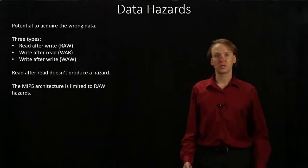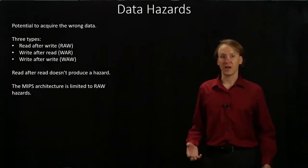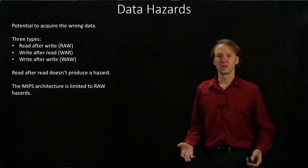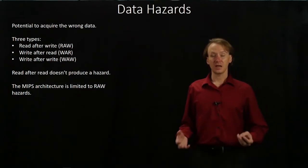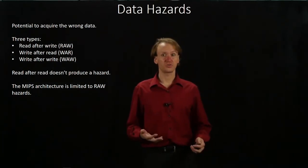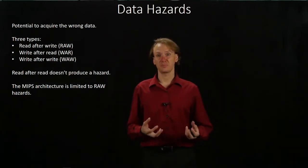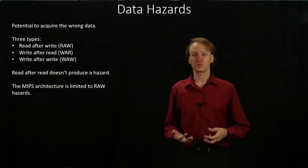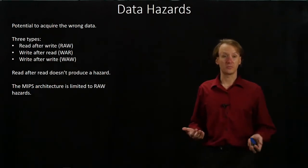This time, we're going to be looking at the second type of hazard: data hazards. Data hazards occur when two instructions try to access the same piece of data, either in a register or in a block of memory.